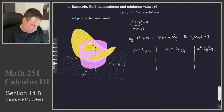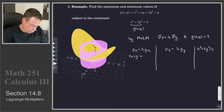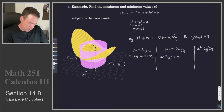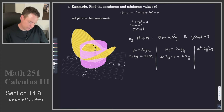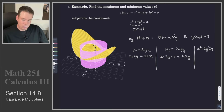Taking the partial derivatives: p sub x gives 2x plus y, equal to lambda times g sub x. Since g sub x is 2x, that becomes 2 lambda x. Then p sub y is x plus 4y minus 1, equal to lambda times g sub y. Since g sub y is 4y, that becomes 4 lambda y. So we have our three equations in three unknowns x, y, and lambda.